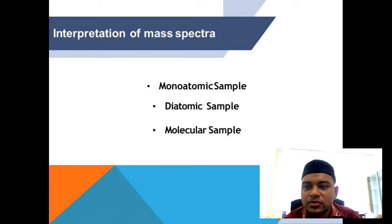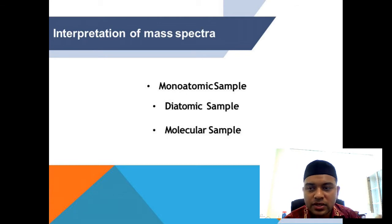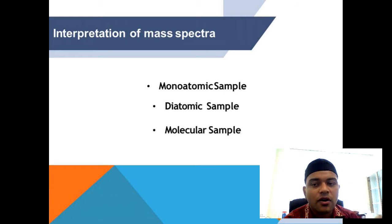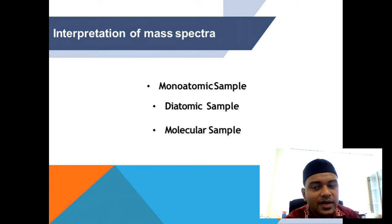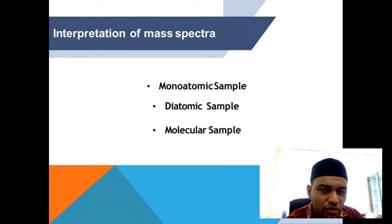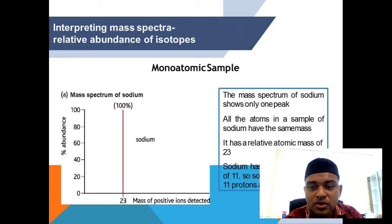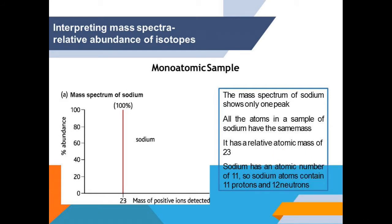Okay guys, welcome back to my next video. For this particular video, I'm going to discuss the interpretations of the mass spectrometer. We are going to look at three examples: monatomic samples, diatomic samples, and some molecule samples. In this video, I'm only going to discuss simple molecules — I'm not going to make it very complicated. Without further ado, let's look at the first one.